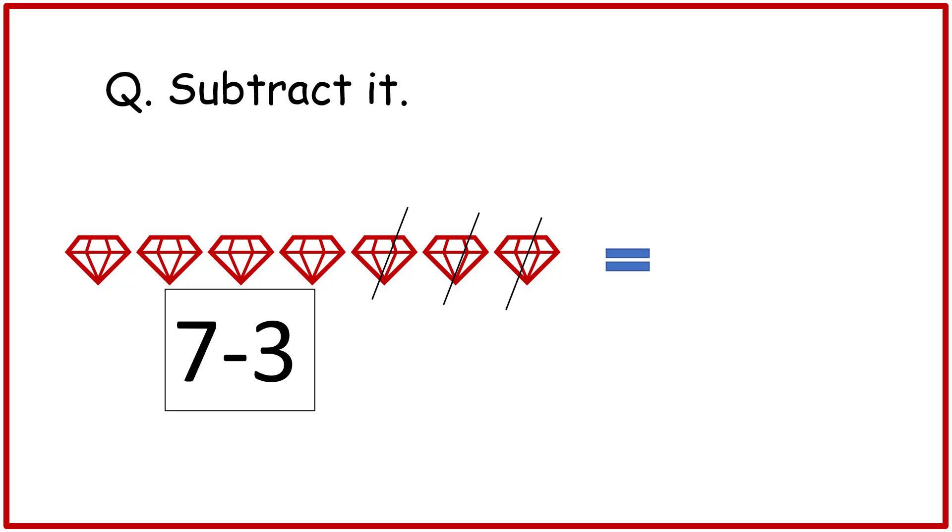Question. Subtract it. 7 minus 3 is equal to 4.